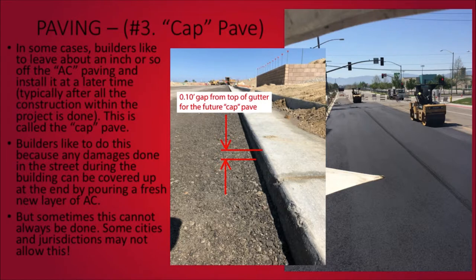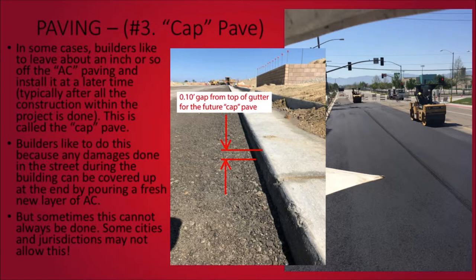The third and final layer of the paving section is known as the cap pave. In some cases, builders like to leave about an inch or so off the AC paving and install it at a later time — typically after all the construction within the project is done. Builders like to do this because any damages done to the street during construction can typically be covered up at the end simply by pouring a fresh new layer of asphalt over the top. On the flip side, if a builder were to install the paving section at full lift without the one-inch cap, any repairs required by the city or county at the end of the job due to street damage could be a lot more extensive and expensive than simply doing a cap pave at the end.